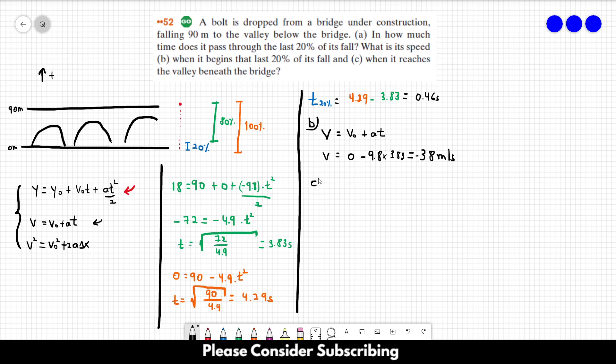And let's see the velocity when it reaches the valley. So we will use this time over here, 4.29. So the velocity is exactly the same equation. So it's 0 minus 9.8 times 4.29. And this is equal to roughly 42. Minus 42 meters per second. This is the velocity. Over here this is the answer of this exercise.